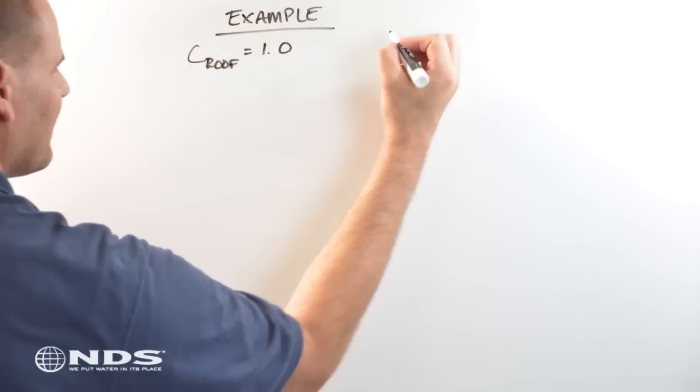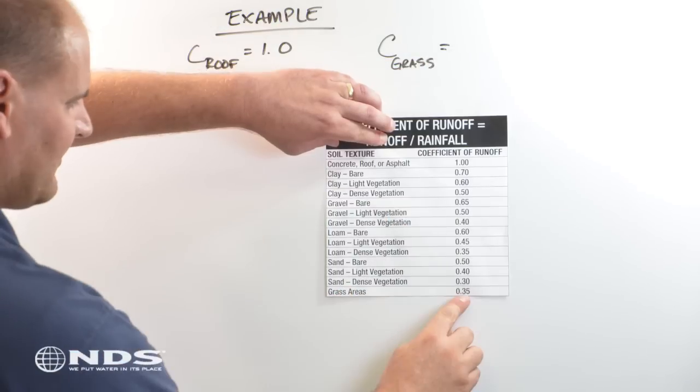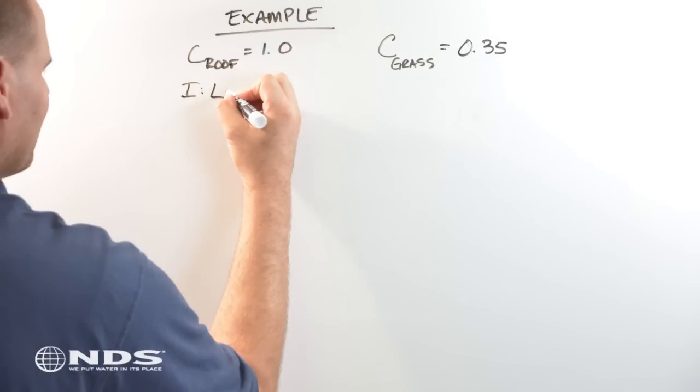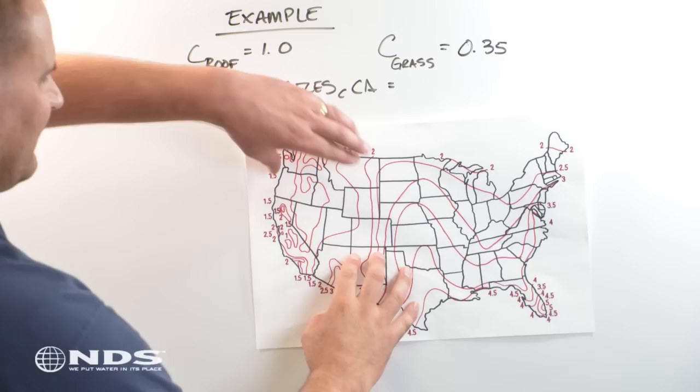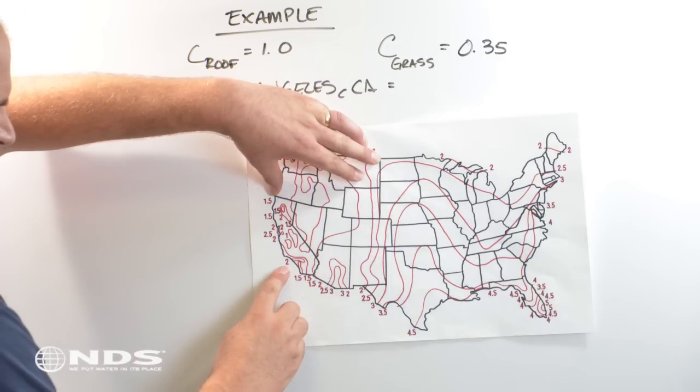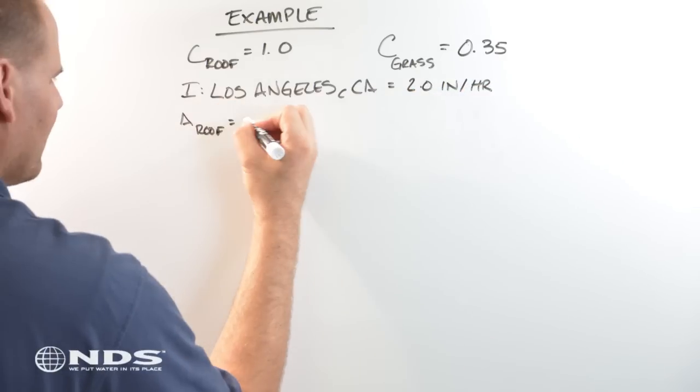In this example, water is coming from both the roof and the grass, with areas of 800 and 1,000 square feet, respectively. We will assume 2 inches of rainfall per hour.